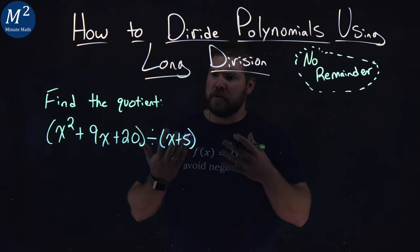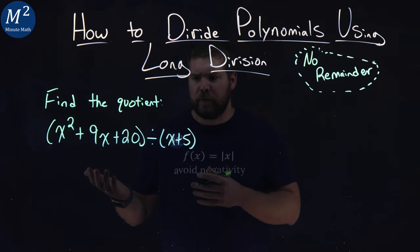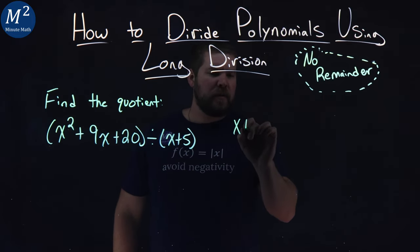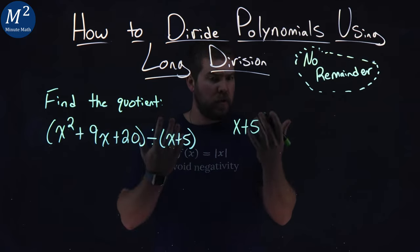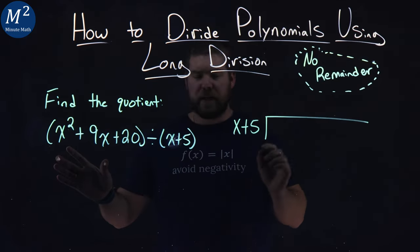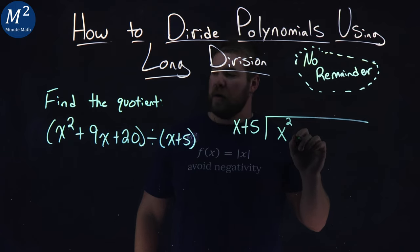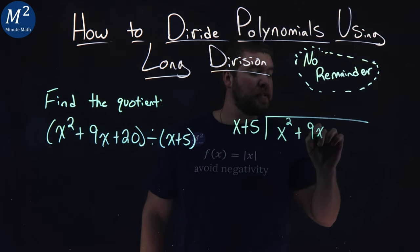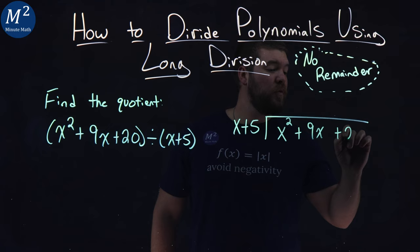So let's set up the long division for these polynomials. We take the x plus 5, and just like normal long division, it's going into the first part here: x squared plus 9x plus 20.